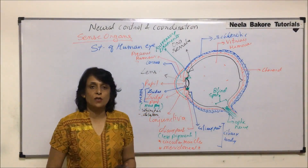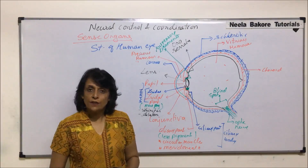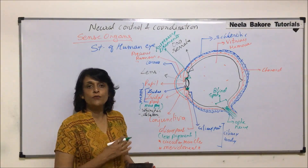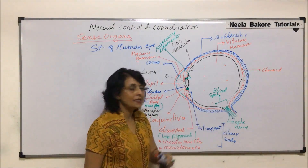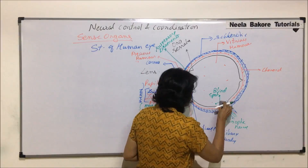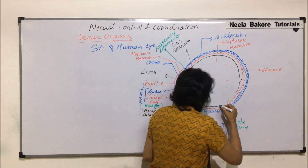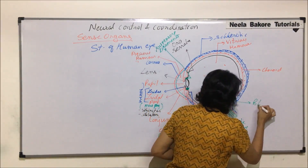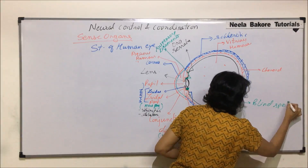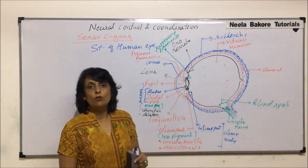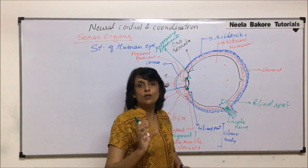Let us continue with the structure of the eye. Most of the things we have discussed in the previous part. Now there are a few more labels which we have to add. We have drawn the blind spot here, and the blind spot is the region where there are no rod cells or cone cells, so there is no visual reception in this area.